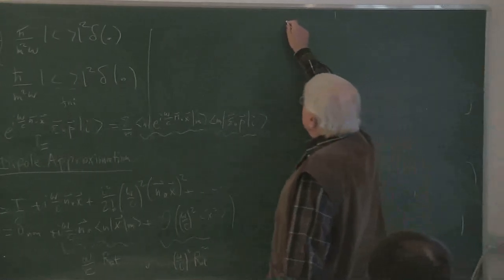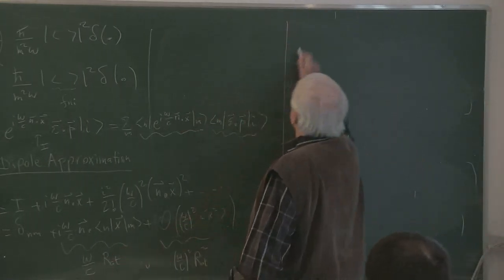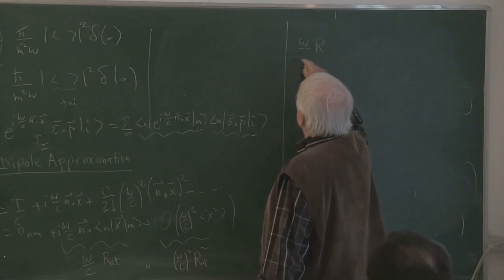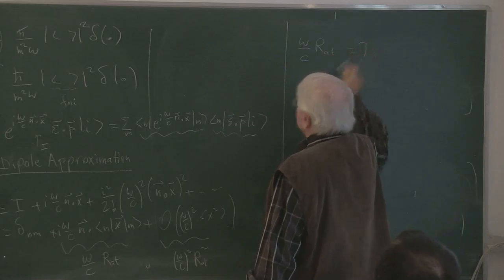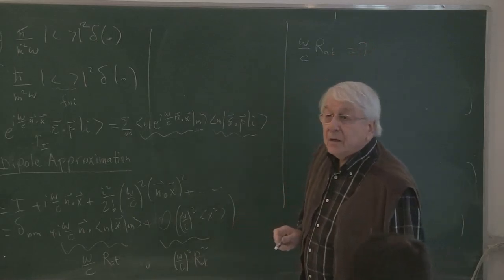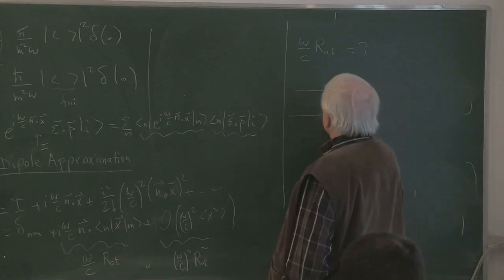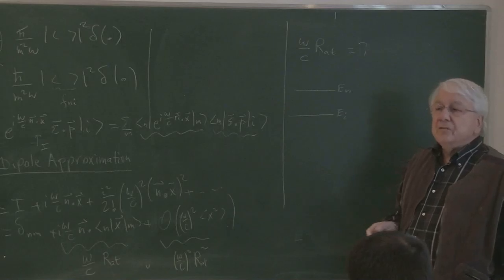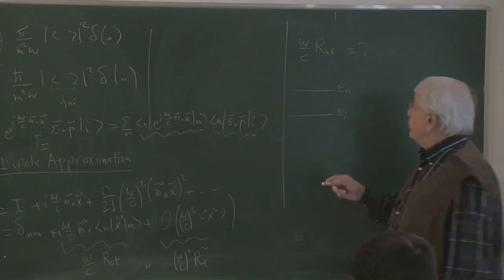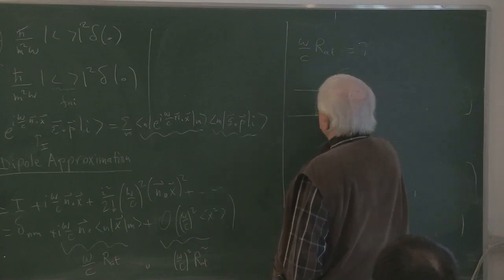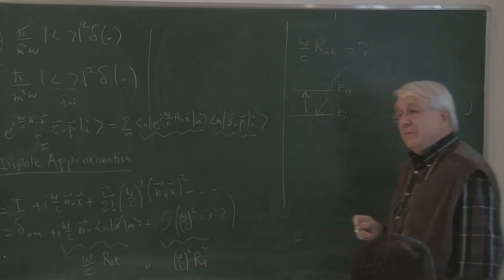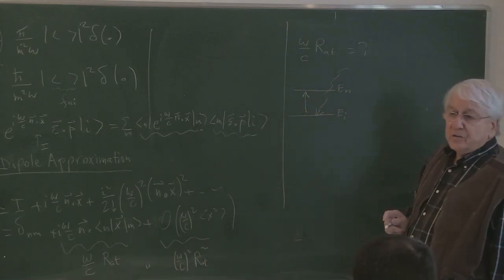What I would like to estimate now is: what is omega/c times r_atom? It's such a powerful argument. Can we estimate this? Of course we can, based on the following very simple reasoning. Here is E_i and E_n, the two levels in question involving the absorption process. The light is coming in, absorbed by this level, and raised to an excited level.